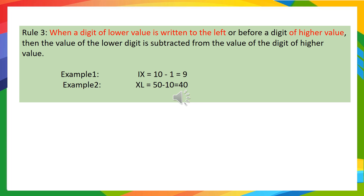Rule 3: when a digit of lower value is written to the left of a higher value, then the value of the lower digit is subtracted from the value of the digit of higher value. In example 1, you can observe IX. I means 1 and X means 10. Since 1 is written before 10, we will subtract the digits and the answer will be 9.